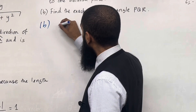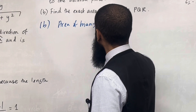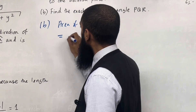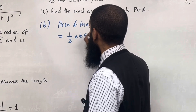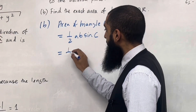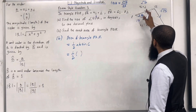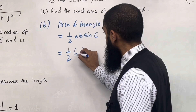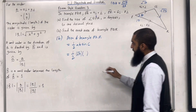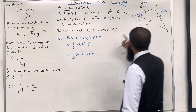The area of triangle PQR is given by ½ × a × b × sin C. In this case: Area = ½ × √17 × 10 × sin θ.